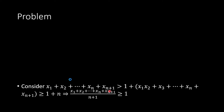Now consider the n numbers: (x1·x2), x3, ..., x(n+1). Their product equals 1, and by the induction hypothesis, n numbers with product 1 have sum ≥ n. Therefore, combining everything, the sum of all n+1 original numbers is greater than or equal to n+1, and dividing by n+1 shows the average is ≥ 1, completing the lemma.